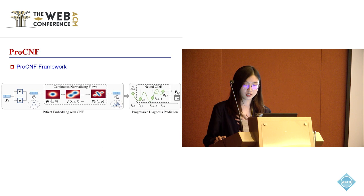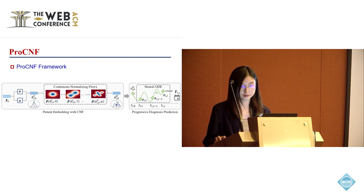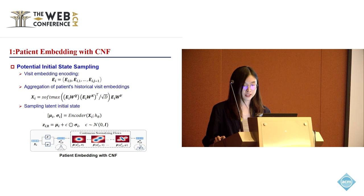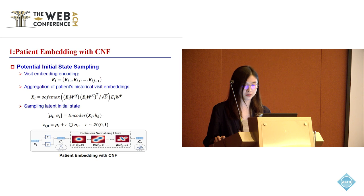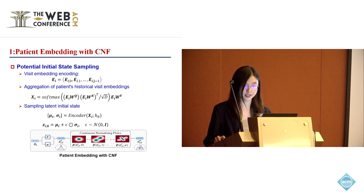Then, based on the complex patient distributions, we propose a CNF-enhanced neural ODE model for diagnostic prediction. First, given the multi-hot diagnosis vector, we pick out the corresponding diagnosis embeddings and sum them up to get visit embeddings by factorized matrix product. Then, we aggregate the patient's historical visit embeddings through a self-attention mechanism. In this way, we can apply the widely adopted reparametrization trick for sampling a latent initial state, where we utilize MLP as an encoder.